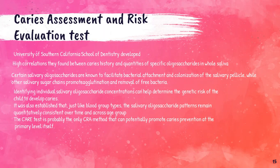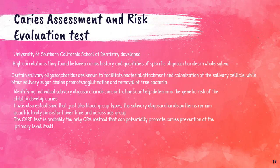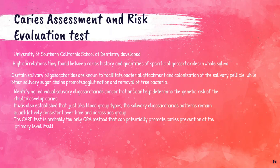The Caries Assessment and Risk Evaluation (CARE) test was developed by the Southern California School of Dentistry. It is the first test that determines caries risk of an individual even at the primary level, before the development or without the presence of any risk factors. This test determines that there is a high correlation between the presence of certain salivary oligosaccharides and caries activity. Certain salivary oligosaccharides are known to facilitate bacterial attachment and colonization on the salivary pellicle, while certain others promote agglutination and removal of free bacteria. It determines the genetic risk of a child to develop caries.